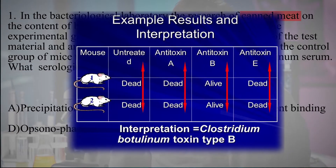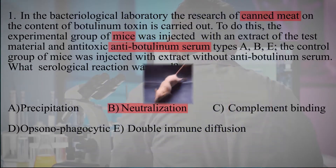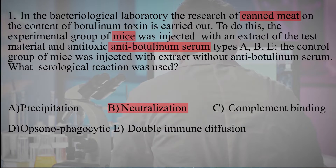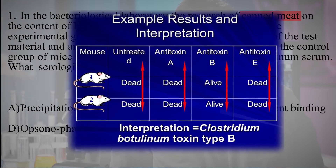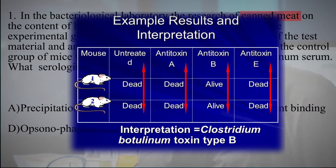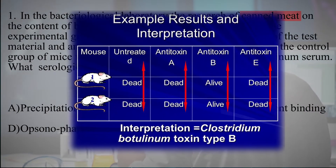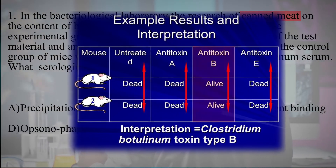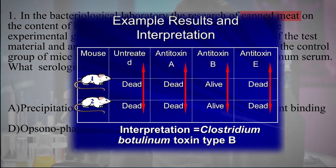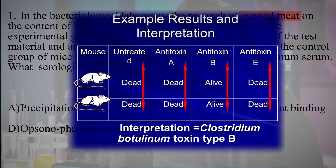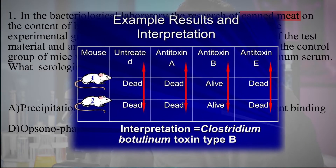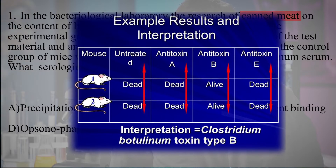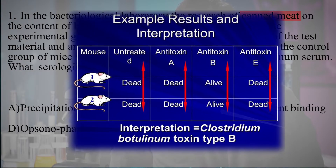Mice die with a typical clinical picture of botulism. In this photo, you can see a mouse with botulism. Mice that were injected with antibotulinum serum corresponding to the type of botulinum toxin circulating in the patient's blood remain alive. If the neutralization reaction is positive with antibotulinum serum against one type, there is no need for bacteriological examination.